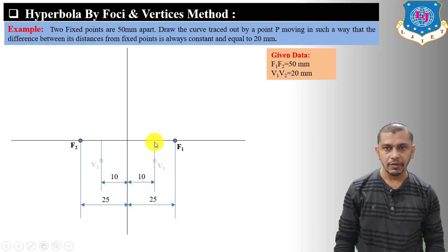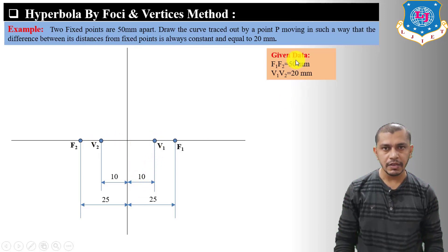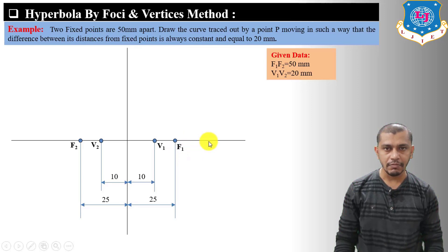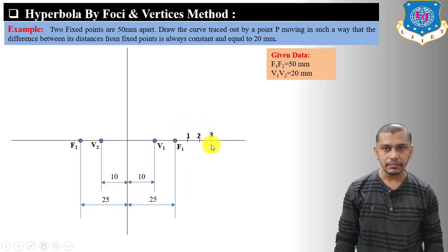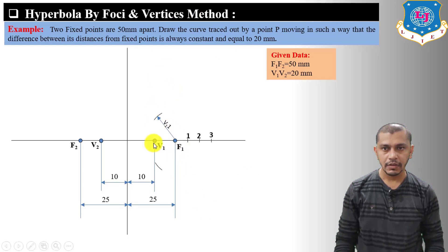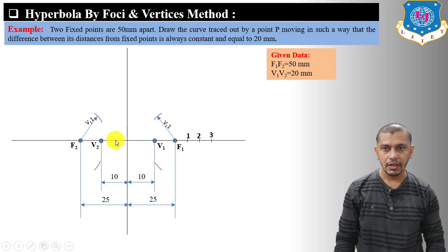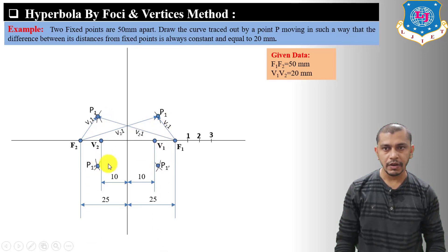From focus point F1 on the right side mark three divisions at random lengths. Measure arc length V1 to 1 on the compass and draw arcs from F1 on both sides. Also draw arcs from F2 on both sides with the same arc length V1 to 1. Then measure V2 to 1 distance on the compass and draw arcs from F2 to get intersections, and from F1 to get intersections. Mark these points P1 and P1'.